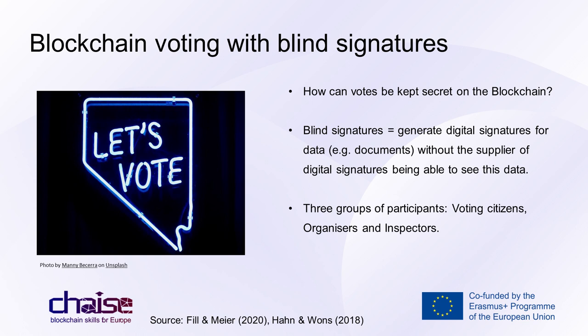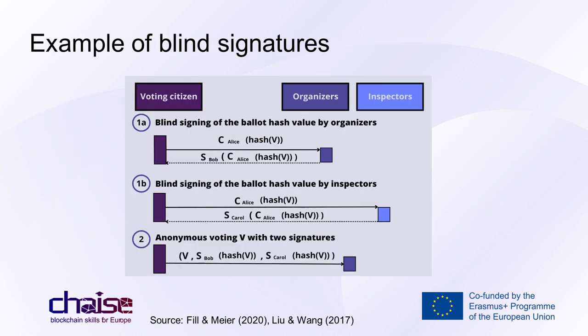Three groups of participants are envisaged for blockchain-based e-voting: Citizens, Organizers, and Inspectors. Voting citizens are eligible voters who must register with the organizers. Organizers conduct the election, verify the voting process, and publish results. Inspectors are appointed to limit the power of organizers, interact with voters, assign blind signatures, and conduct audits. To understand this example, it's important to understand asymmetric encryption. For simplicity, consider one voter Alice, one organizer Bob, and one inspector Carol. After successful registration, Alice can cast her digital vote in two phases — first she obtains two blind signatures: one from organizer Bob and one from inspector Carol.